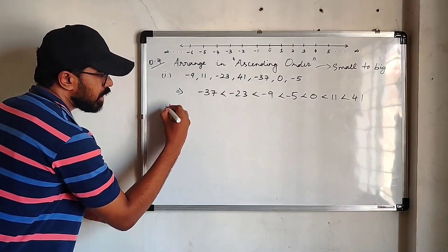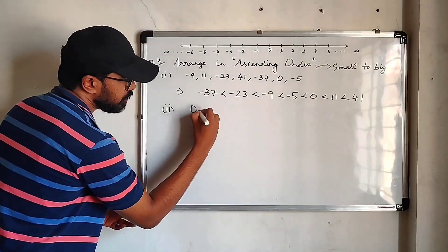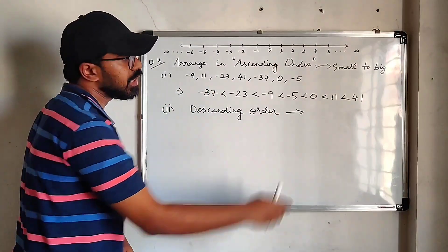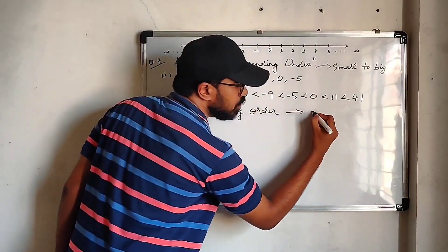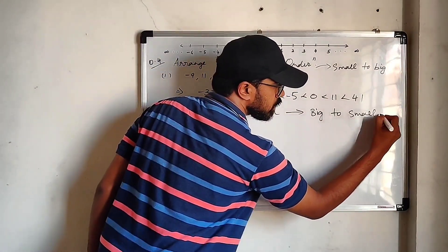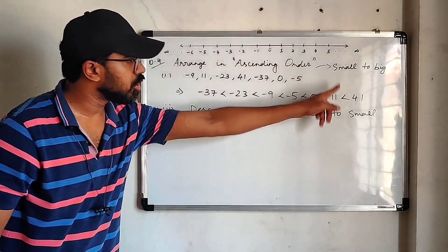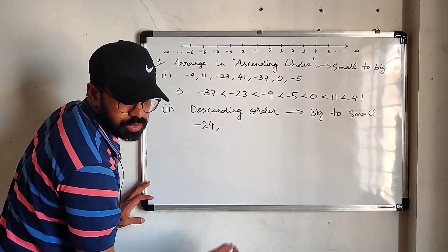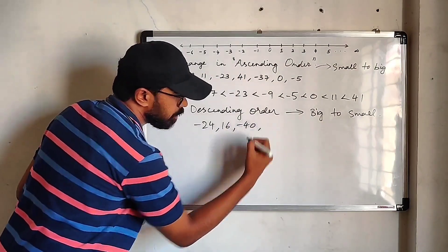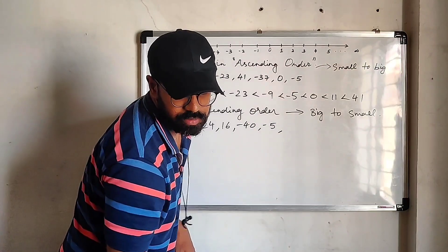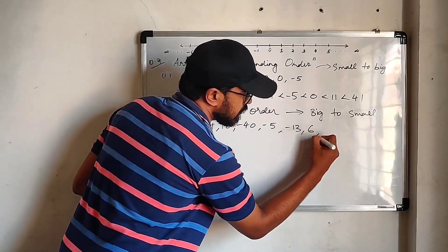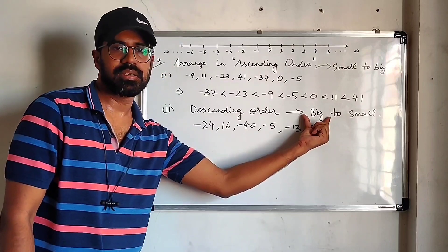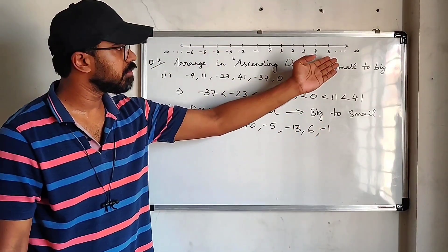Now we will see descending order. Descending order is exactly the opposite — we write from bigger number to smaller number. In question number 4, we saw ascending order. Now for descending order, the set of integers given is: minus 24, 16, minus 40, minus 5, minus 13, 6, and minus 1. In descending order we look for the bigger number first, which means we look for the highest positive number.